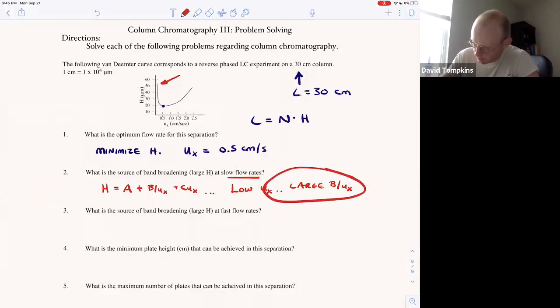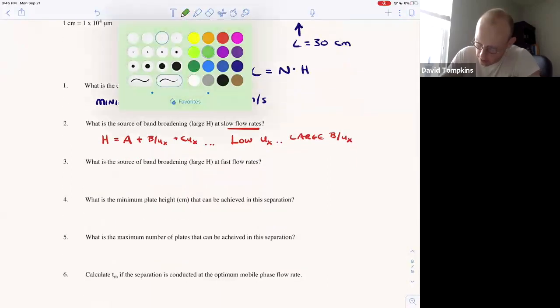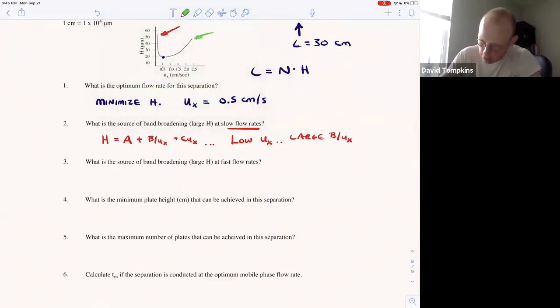Okay, so the main source of band broadening at high flow rates is another term. So over here at fast flow rates we have the same Van Deemter equation but now it's a linear term that is going to increase with flow rate.